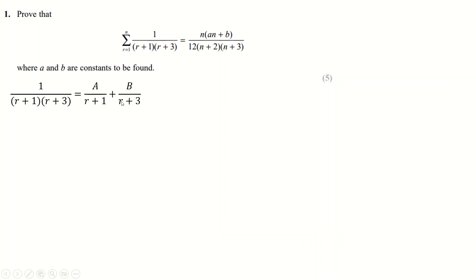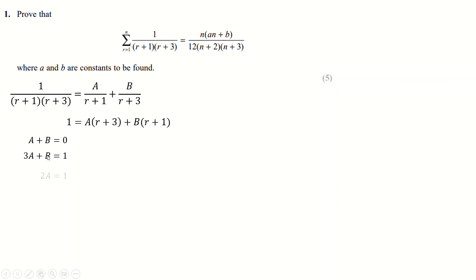So you're just going to write it like this — times this up here, compare that to one. You can either substitute r is minus three, or r is minus one, or you can just compare coefficients. So ar plus br is zero, because there are no r's over there, so a plus b is zero, and then 3a plus b is one, because there's just a one over there.